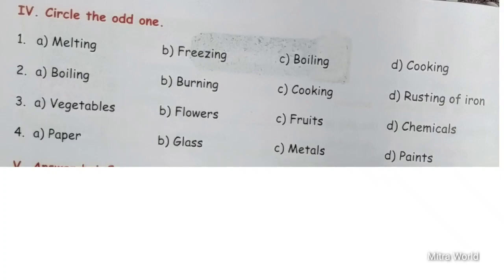Question number 2, options are: boiling, burning, cooking, rusting of iron. Boiling is a reversible change. Burning, cooking, and rusting of iron are irreversible changes. So the odd one is boiling. Question number 3, options are: vegetables, flowers, fruits, chemicals. Vegetables, flowers, and fruits are all organic waste, so Option D, chemicals, is the odd one out.